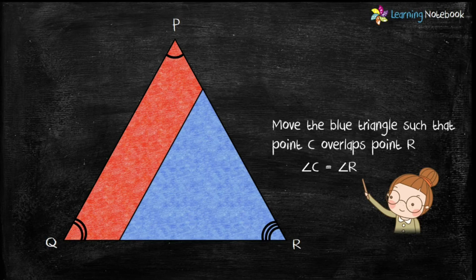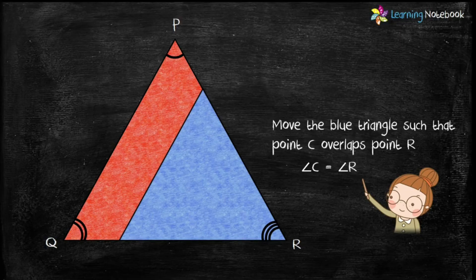So we have seen that in two triangles, ABC and PQR, corresponding angles are equal. Now students, let's see if their corresponding sides are in the same ratio or not.